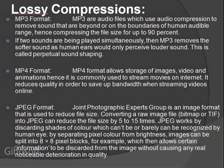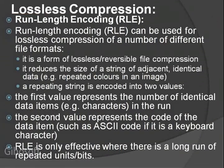JPG works by discarding shades of color which can barely be recognized by the human eye. By separating pixel colors from brightness, images can be split into 8x8 pixel blocks, which allows certain information to be discarded from the image without causing any real noticeable deterioration in quality. You basically cannot tell the difference that quality has been dropped, but for the computer the file size has been reduced exponentially.